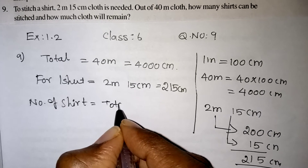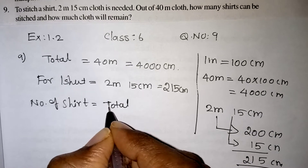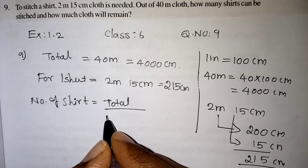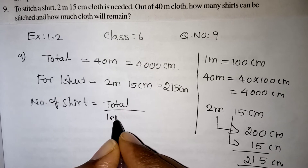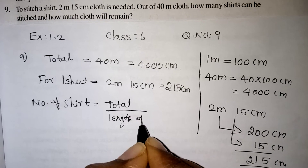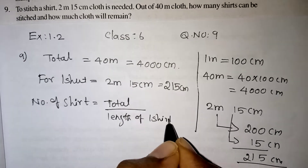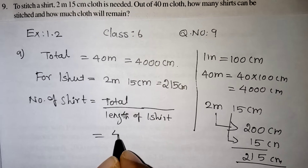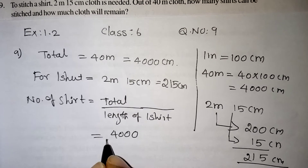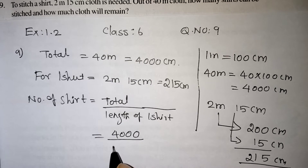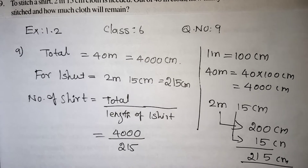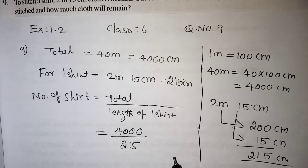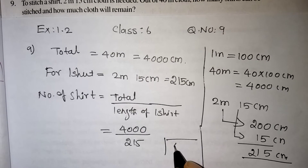The number of shirts that can be stitched from the given cloth will be: total cloth availability divided by the length needed for one shirt. Here, 4000 is the total cloth availability and 215 centimetres is the cloth needed for one shirt. So we divide 4000 by 215.